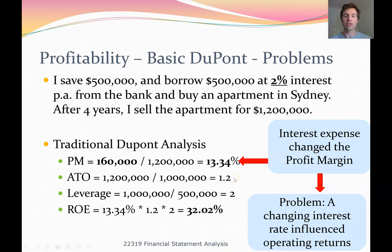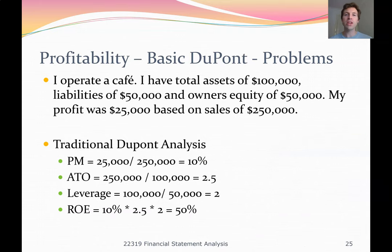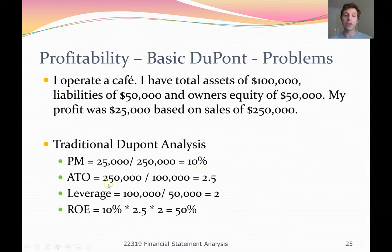So far, asset turnover looks trustworthy — let's look at problems with that. I'm switching to a simple cafe example: total assets of $100,000, liabilities of $50,000, and owner's equity of $50,000. Profit was $25,000 on sales of $250,000. Profit margin is 10%; asset turnover is 2.5; leverage is two. ROE equals 10% times 2.5 times 2 — a 50% ROE. A very successful cafe.